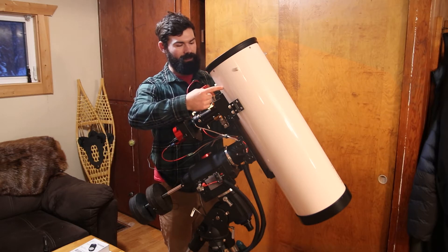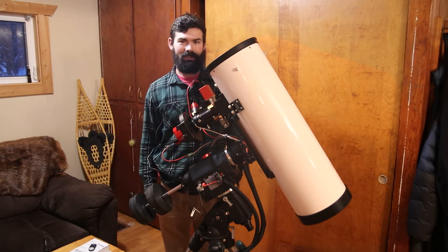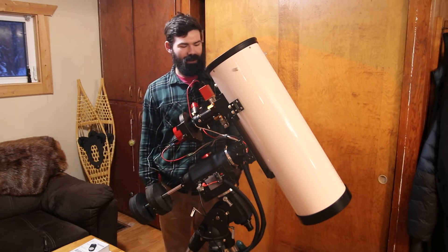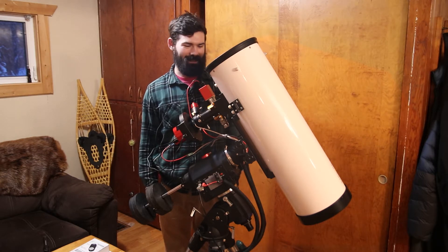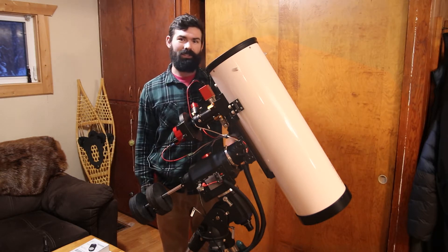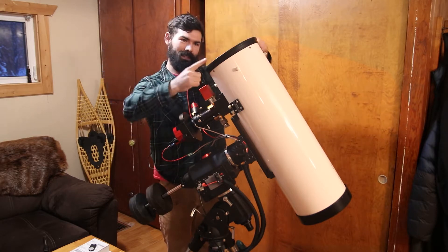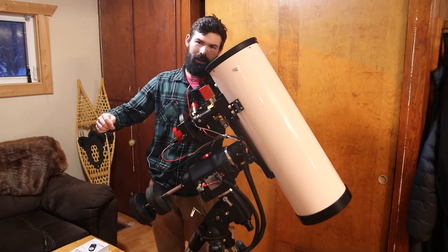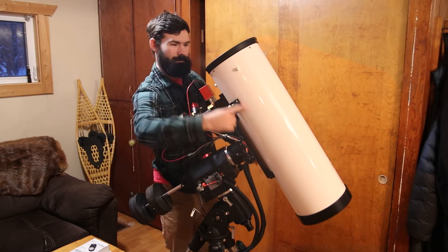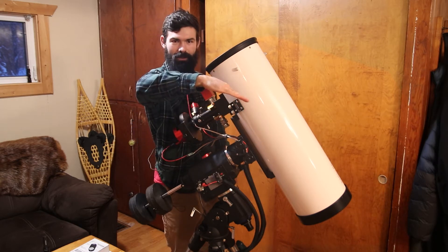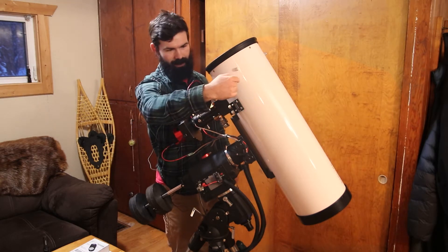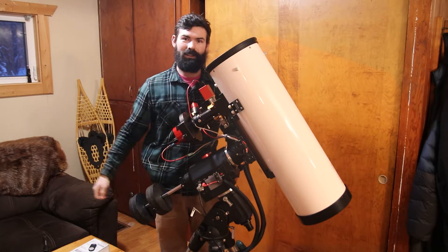So starting out is my telescope. This is an Explore Scientific or Bresser, I'm not sure really. The branding's kind of confusing. Eight inch imaging Newtonian. So light comes in here. There's a big mirror at the bottom. It reflects back up. There's another little mirror at about 45 degrees here and it reflects light into my imaging train.